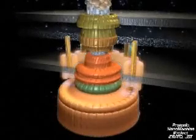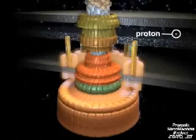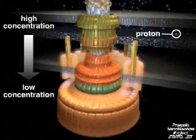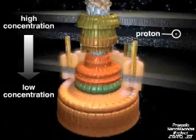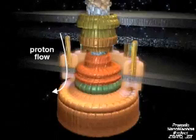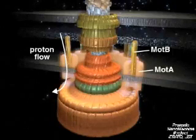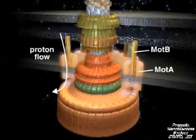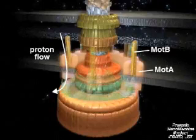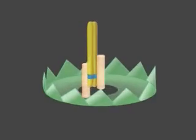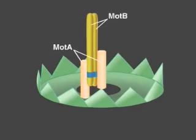The motor derives its power from a proton gradient across the membrane. In this example, a high concentration of protons exists outside, and a low concentration exists inside the cell. The protons flow through the interface between two types of proteins, called MotA and MotB, that make up the stator. Mutational studies suggest that a conserved aspartic acid in MotB functions in proton conductance. Each stator contains two MotB proteins, and therefore also contains two of these important aspartic acids.